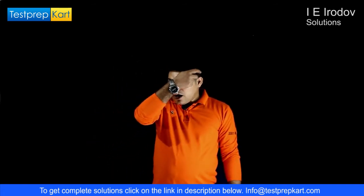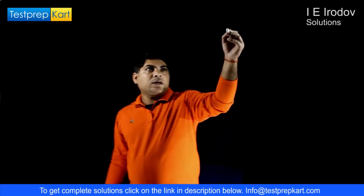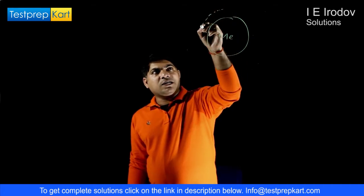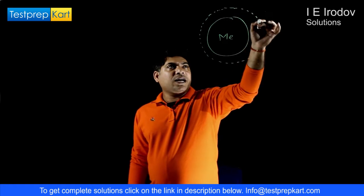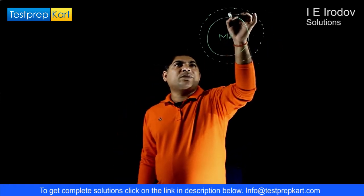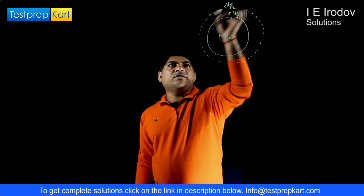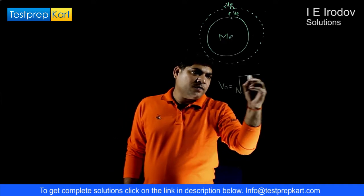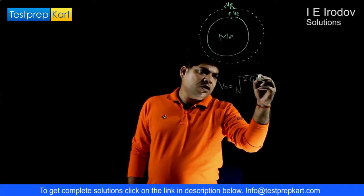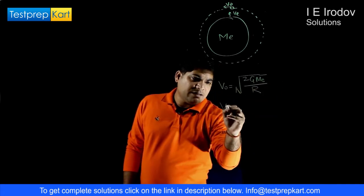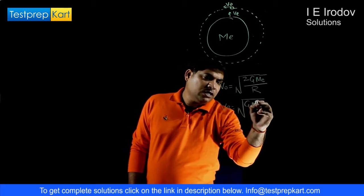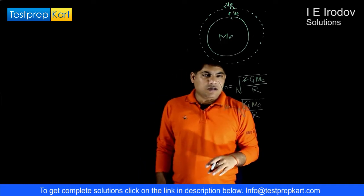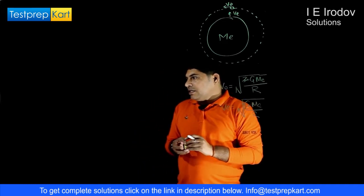Whenever any object moves around the earth, taking earth at our center, there are two velocities that come into the picture: one is escape velocity and another is orbital velocity v_o. The orbital velocity is sqrt(GM_e / r) and escape velocity is sqrt(2GM_e / r). We can use direct formulas or perform fundamental calculations as needed.